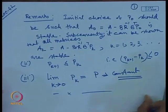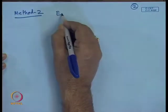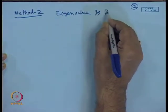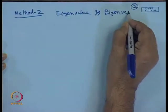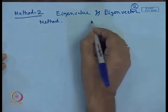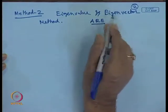One disadvantage of the iterative method is that if the initial guess is not appropriate, it will take longer to converge the solution P to a constant value. The next method — Method 2 — is the Eigenvalue-Eigenvector method, where one can find the solution of the algebraic Riccati equation based on the concept of eigenvalues and eigenvectors of the Hamiltonian matrix.